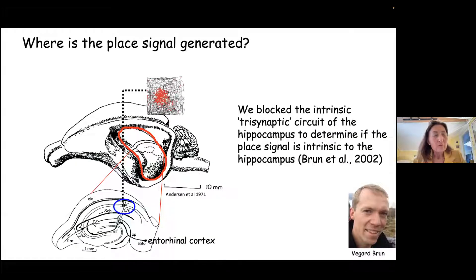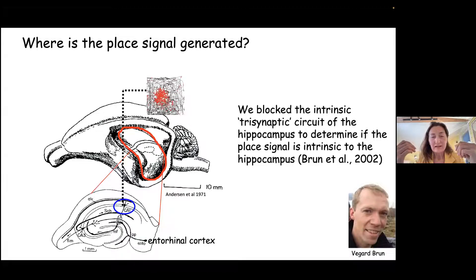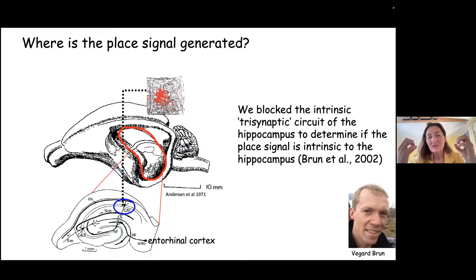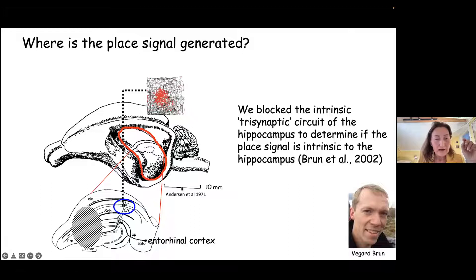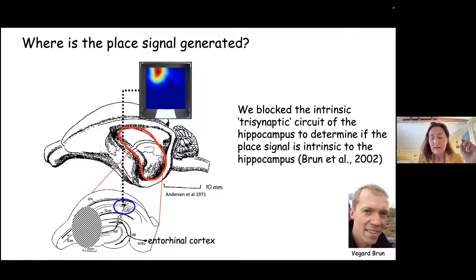Before I talk more about what happened where, I'd like to introduce another question we found quite interesting when Edward Moser and I started our lab in 1996 here in Trondheim, Norway. We asked the simple question: where is the place signal generated that John O'Keefe recorded? What we did was to record from the hippocampus after the signal pathway — the trisynaptic circuit from entorhinal cortex through the hippocampus — was blocked with small lesions. We asked: can we still get this place signal in the hippocampus? The conclusion was yes.